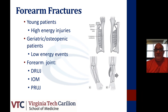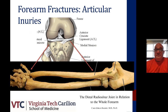One thing to consider when treating forearm fractures is to consider the forearm as a joint composed of the distal radioulnar joint, the interosseous membrane, and the proximal radioulnar joint. When we look at fractures of the forearm, also consider them as some form of articular injury. They tend to involve the distal radioulnar joint, the proximal radioulnar joint, interposed with the radius and the ulna and the interosseous membrane in the middle.